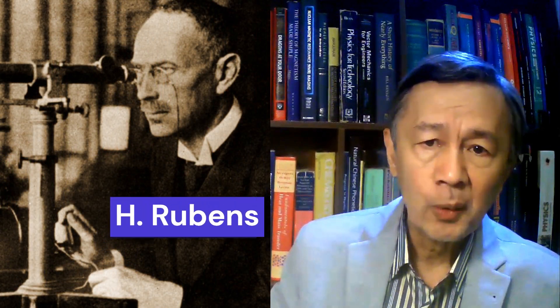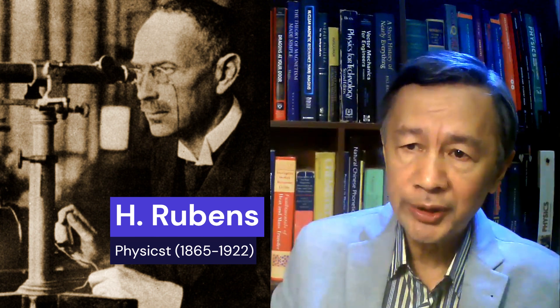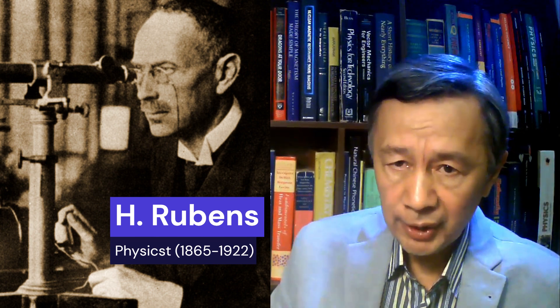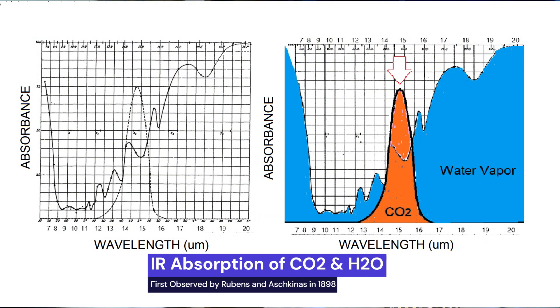Rubens is known for the measurement of the blackbody radiation, which led Planck to discover his radiation law. He is also known for the first observation of infrared absorption by water vapor and CO2, as shown in this diagram. To help you to see the spectra easily, I have colored the two components, namely the water vapor and the CO2.